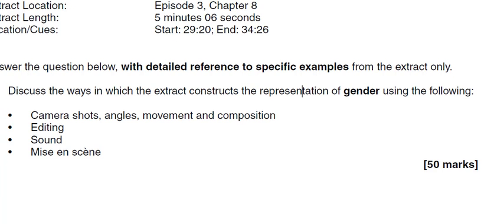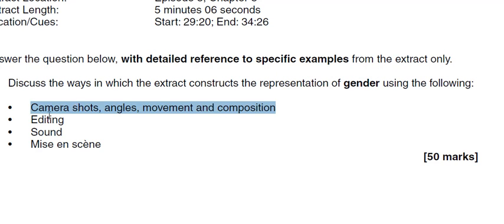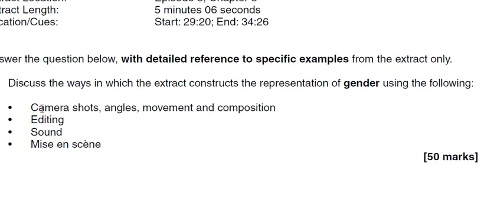The question in this case was: 'Discuss the ways in which the extract constructs the representation of gender using the following.' And it asks for camera shots, angles, movement and composition — so camera work — editing, sound, and mise-en-scène. It gives you four different things to look at. In terms of your planning, that's a gift really, because you know that you can write a section on the first one, then on the second, then on the third, then on the fourth. It should make structuring your essay really easy.